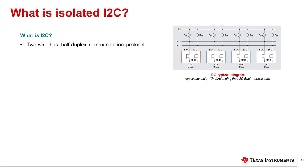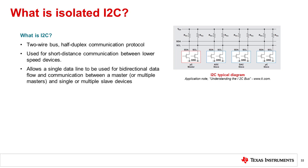What is isolated I2C? The Inter-Integrated Circuit or I2C bus is a two-wire bus, half-duplex communication protocol primarily used for short distance communication between lower speed devices. The I2C bus uses an open drain open collector with an input buffer on the same line, which allows a single data line to be used for bi-directional data flow and communication between a master or multiple masters, and a single or multiple slave devices. The flexibility allows many different peripherals to share a single bus, which is extremely useful for connection between lower speed devices in a system like microcontrollers, EPROMs, A2D converters, and IO interfaces with other peripherals on a system.